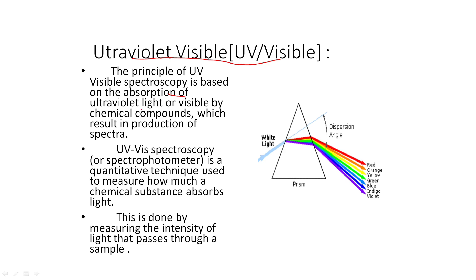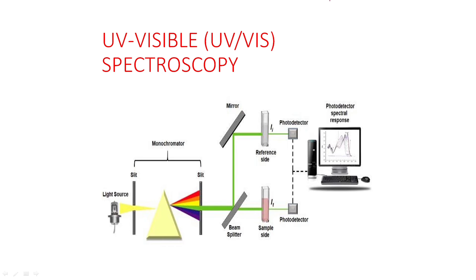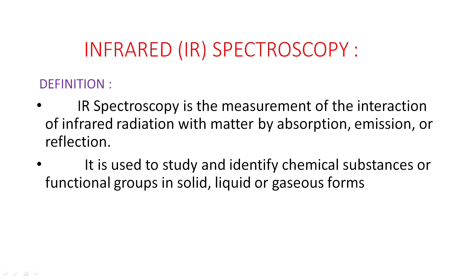Ultraviolet spectroscopy involves UV light, which is very intense. The principle of UV spectroscopy is Beer-Lambert's law — describing the interaction of light and matter. The amount of energy absorbed depends on the concentration of the substance. A light source passes through a prism, then through the sample, and the transmitted radiation is measured by a detector.